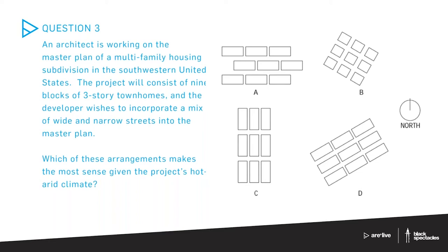Now that we have a full understanding of how to understand the sun's movement through the sky, let's move on to question three, which focuses on master planning and massing configuration. An architect is working on the master plan of a multi-family housing subdivision in the southwestern United States. The project will consist of nine blocks of three-story townhomes and the developer wishes to incorporate a mix of wide and narrow streets in the master plan. Which of these arrangements makes the most sense given the project's hot, arid climate?